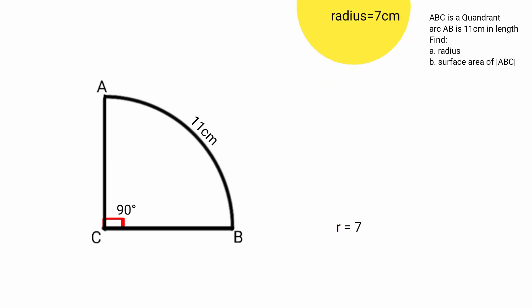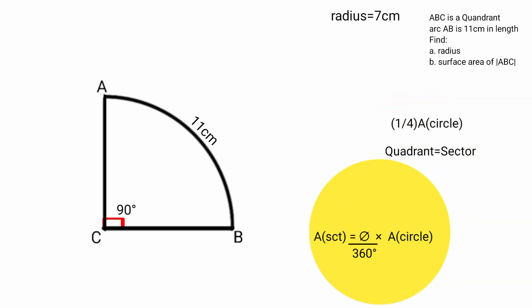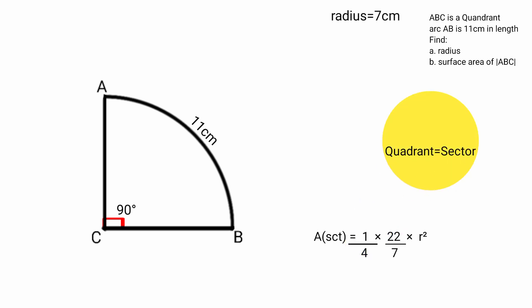So R equals 7, meaning the radius of the circle equals 7 centimeters. Now coming back to the second part: the area of a quadrant is one-fourth of the area of the circle, because a quadrant is also a sector, and the area of a sector is theta over 360 times the area of the circle. Theta is the angle at the center, which is 90 degrees, and the formula for the area of a circle is πR². Here 90 over 360 is 1 over 4.